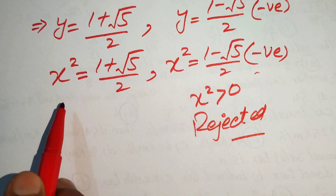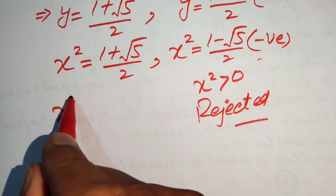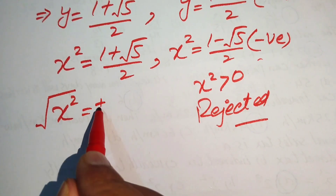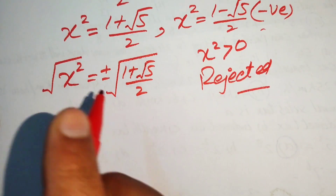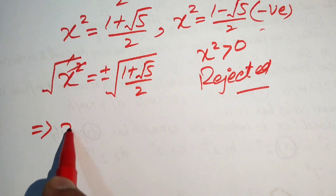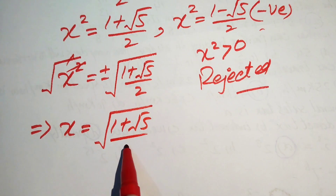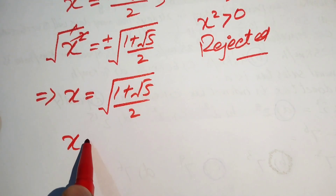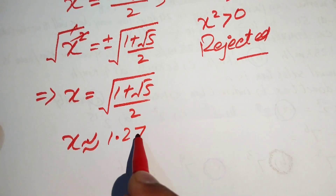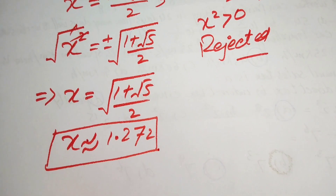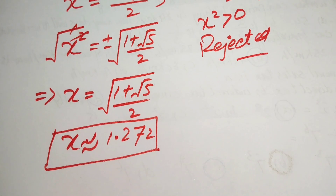We proceed with the valid case: x squared equals (1 plus square root of 5) divided by 2. Taking the square root of both sides and choosing the positive value, we get x equals the square root of (1 plus square root of 5) divided by 2. The approximate value of x is 1.272. This is the final answer. Thank you so much for watching this video — please subscribe to my channel for more exciting videos.